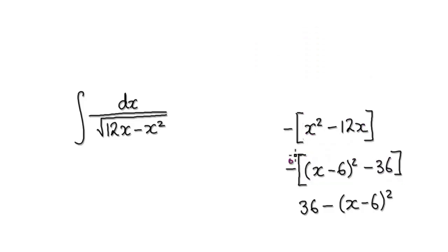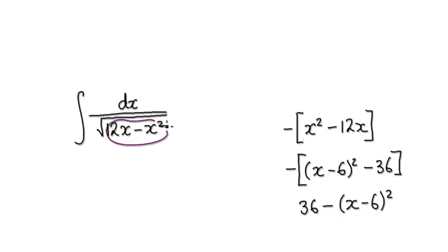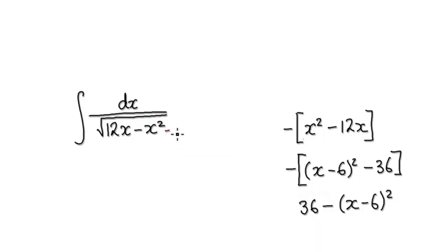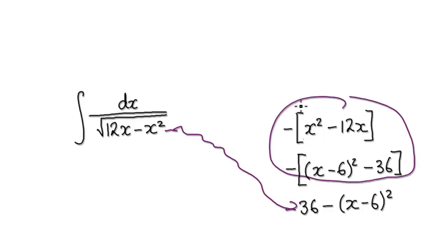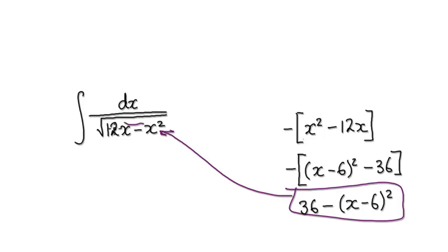Now turn it back. So you've got this times this, that will give you a minus this thing here. And then this times this will give you a positive 36. So complete the square on this bit, that will take you to here. Once you've got this, put this back into here. You can actually just jump to this and bypass this — take yourself to here and then put this back into here.